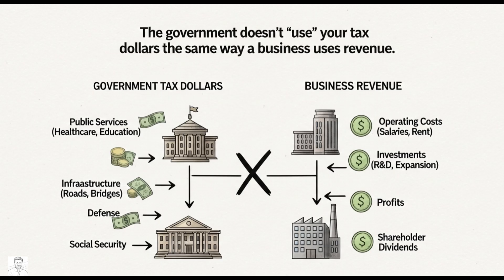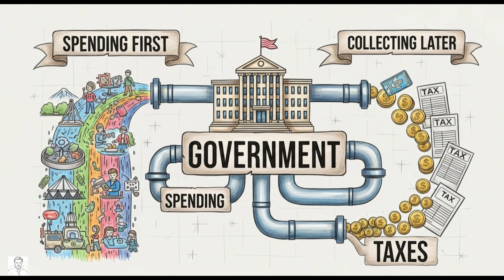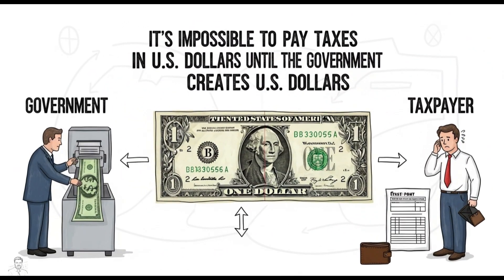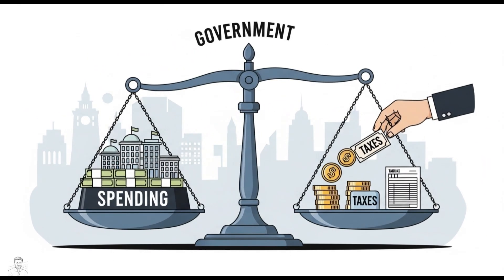Taxes also make sure the system doesn't collapse socially. Now here's the part most people never hear: the government doesn't use your tax dollars the same way a business uses revenue. A business needs income before it can spend. A government is the issuer of money — it creates the currency. So technically it spends first and collects taxes later. It's impossible to pay taxes in US dollars until the government creates US dollars.